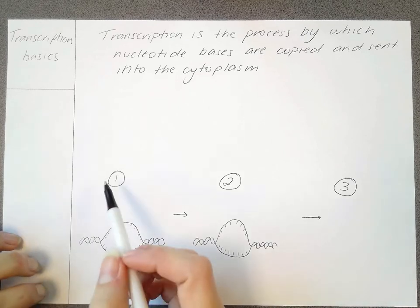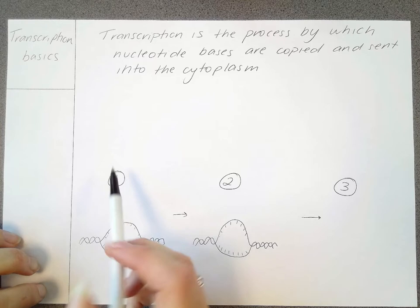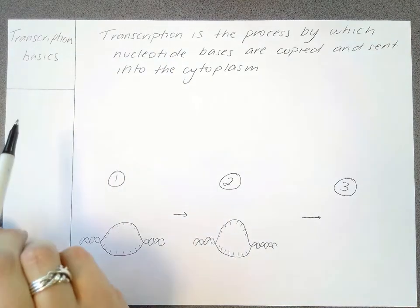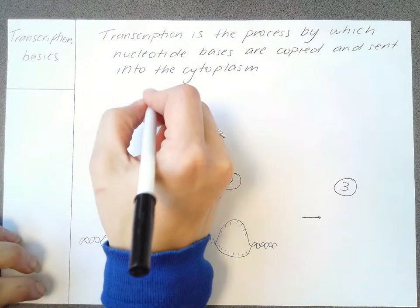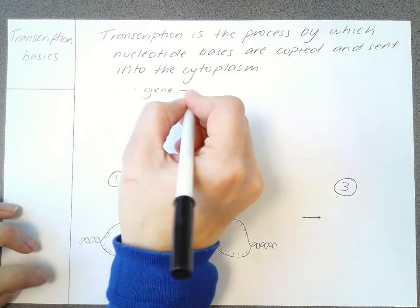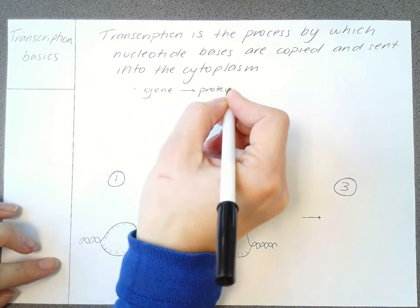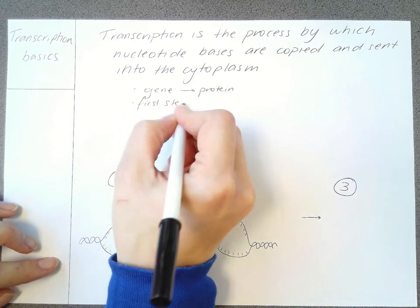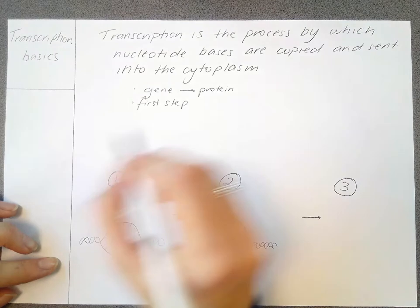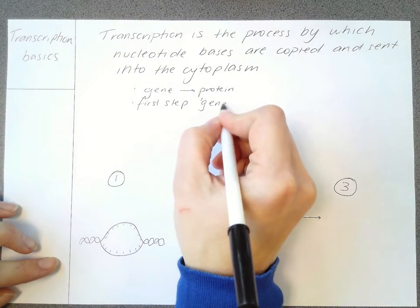Now the process by which it's turned into a protein is called translation, but transcription plus translation make the situation where we go from gene into the protein. Transcription is that very first step in the process and we often call it gene expression.